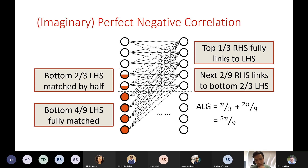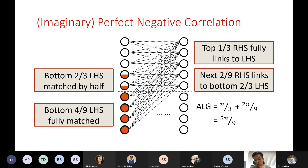Instead, assume imaginary perfect negative correlation — any offline vertex tried two times is fully matched. Running the same example: after the second stage, the bottom four-ninths of left-hand vertices are fully matched, giving matching size 5/9 · n. This is not coincidental — with perfect negative correlation, the two-choice algorithm is indeed 5/9-competitive. The problem is that perfect negative correlation is actually impossible, especially in the online setting.